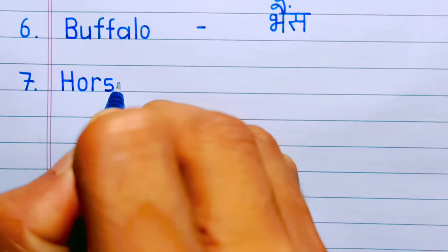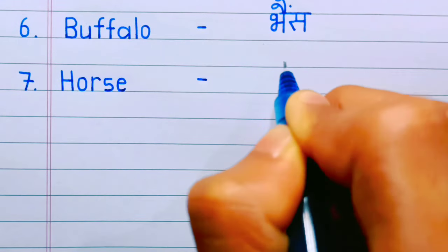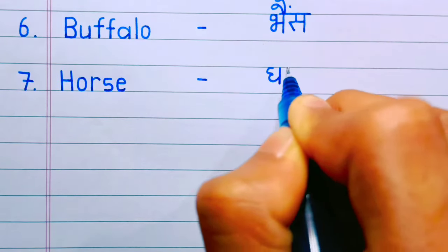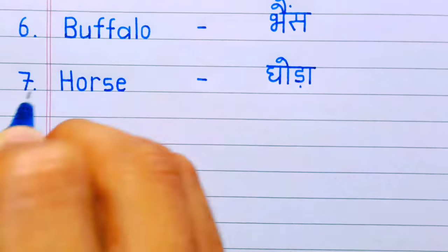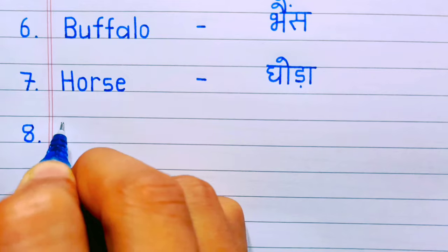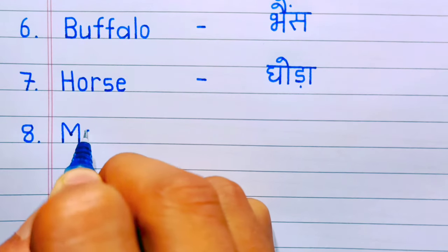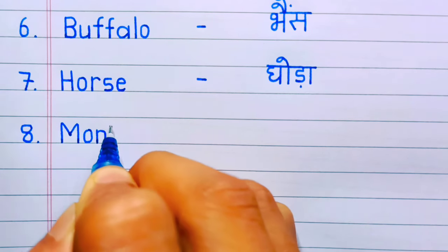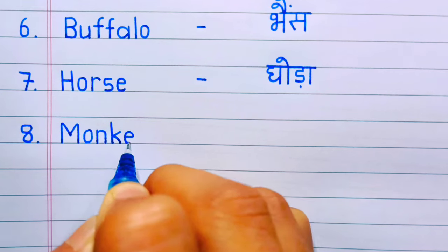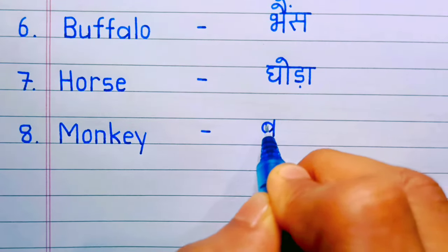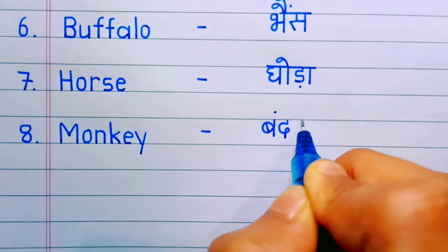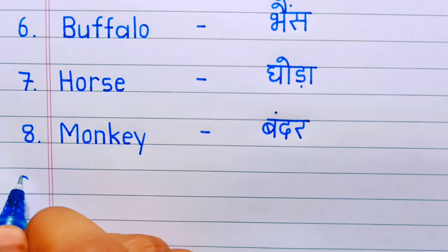Number seven: horse. Horse means ghoda. Number eight: monkey. Monkey means bandar.